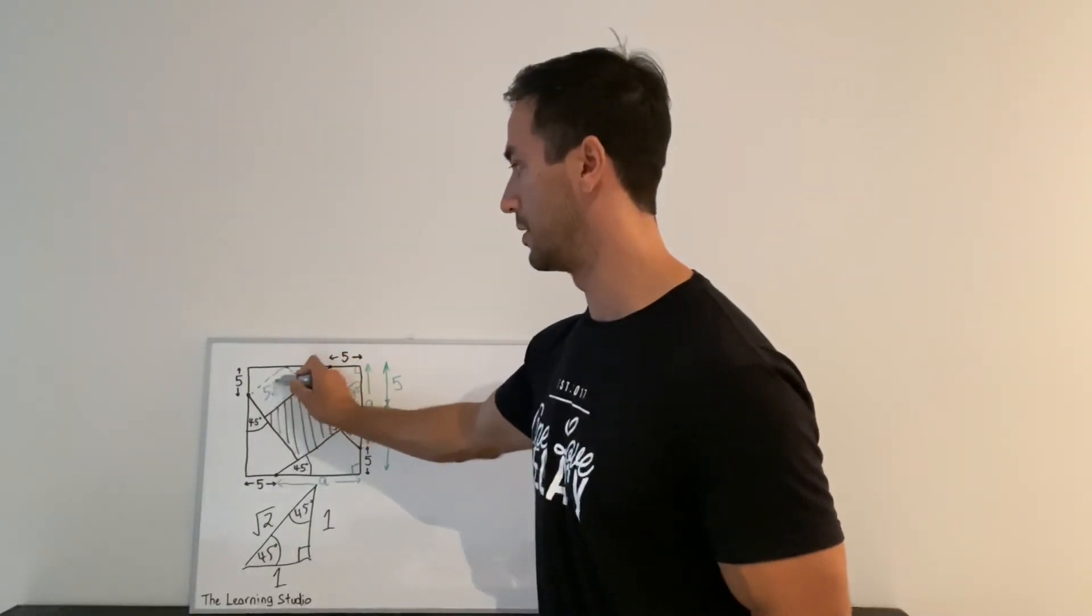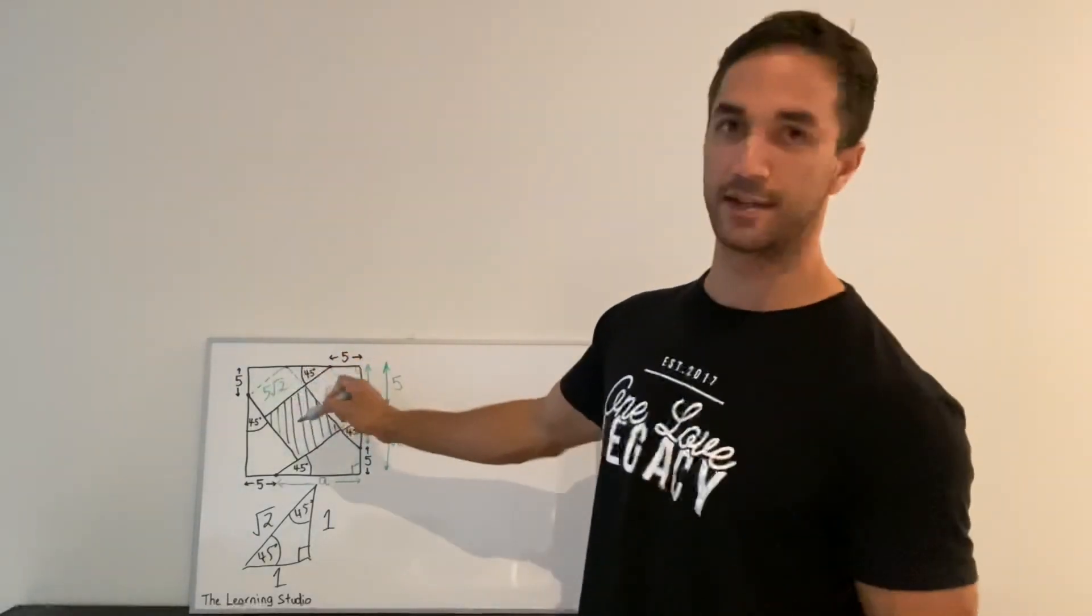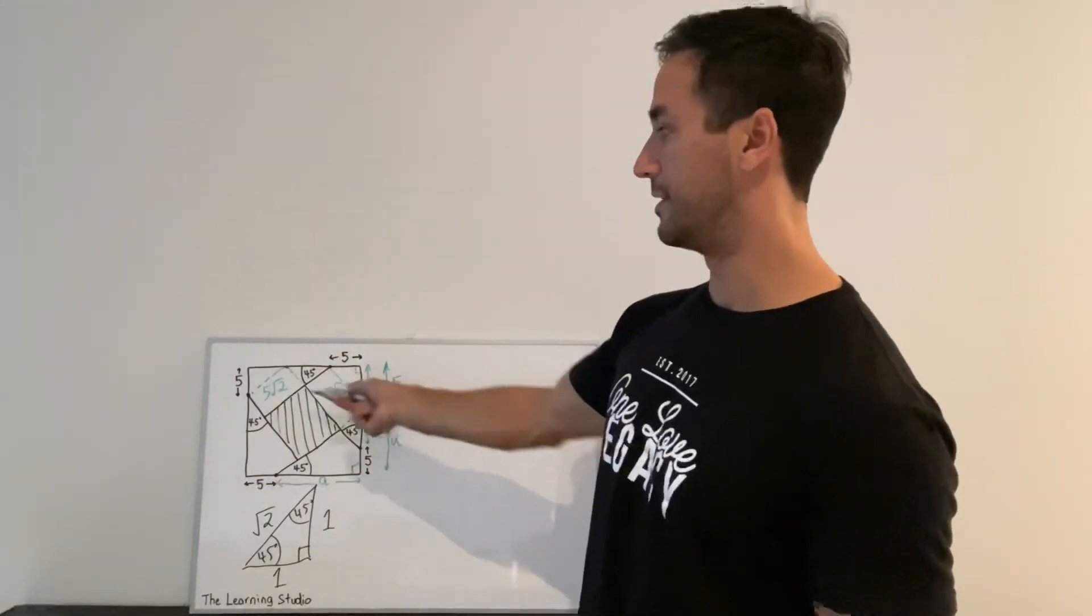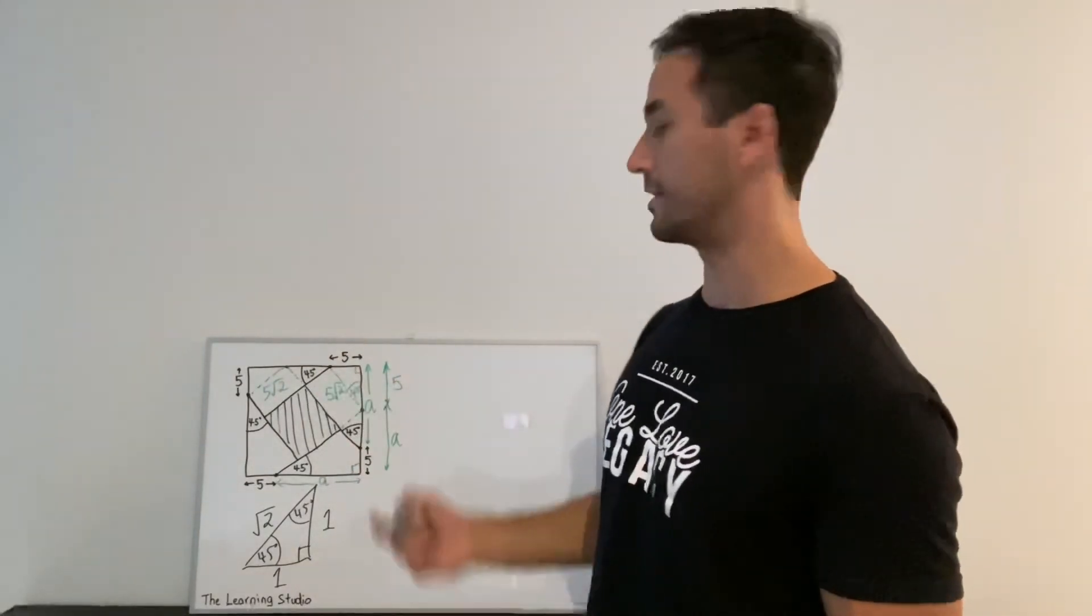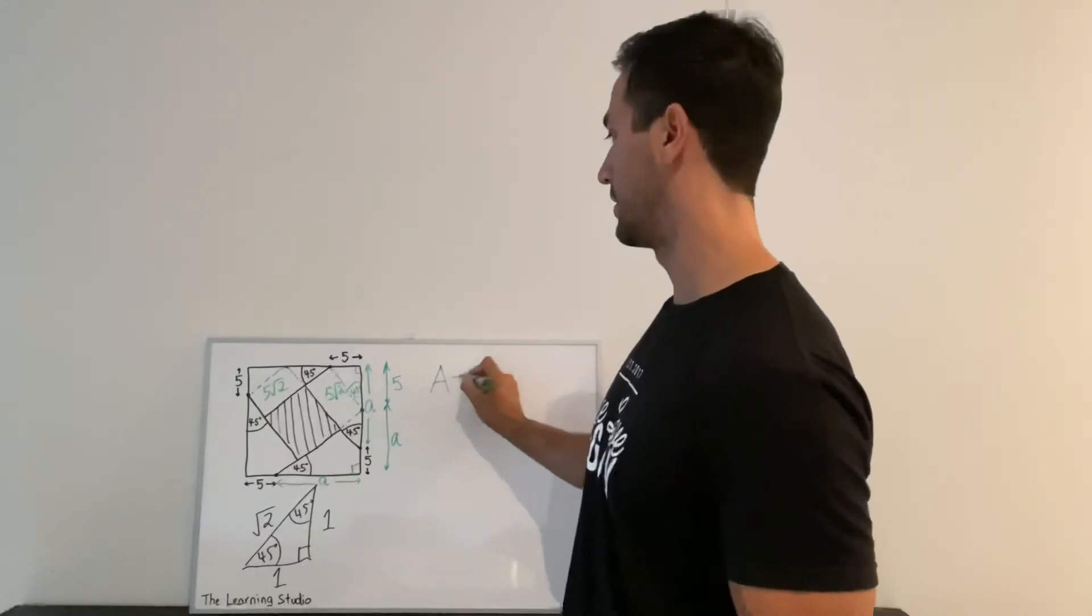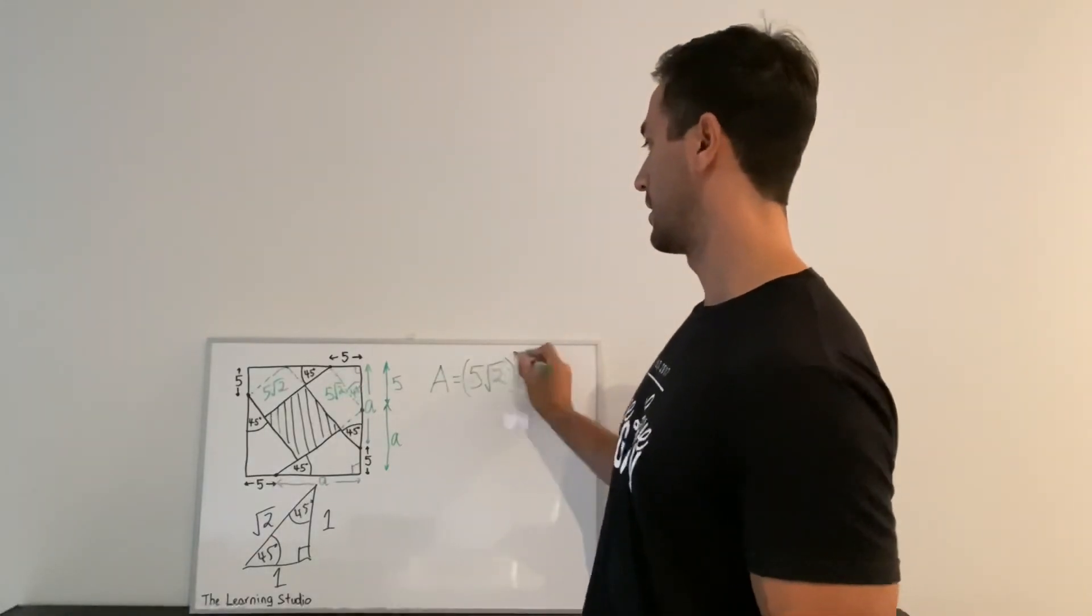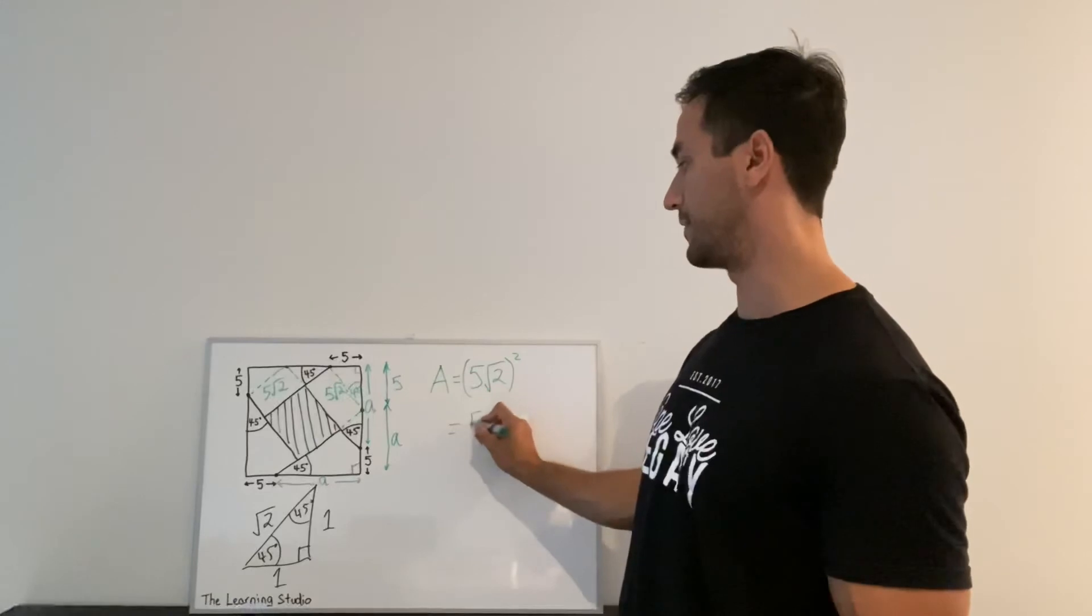So that is indeed a square, and then the area of that square is going to be this thing squared, which is 50.